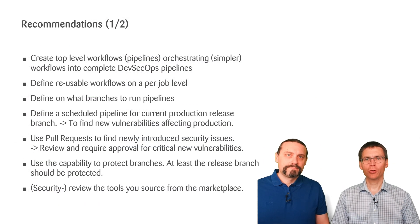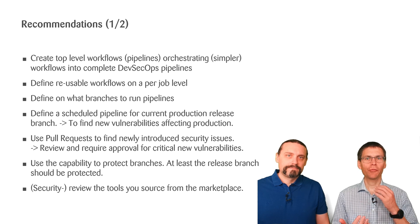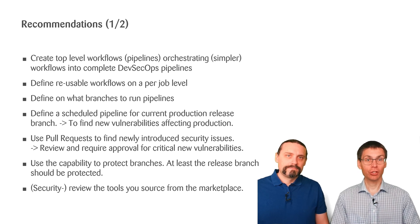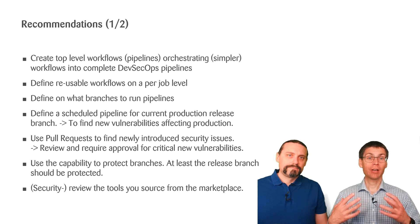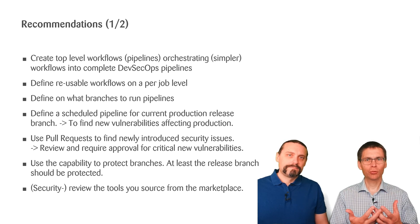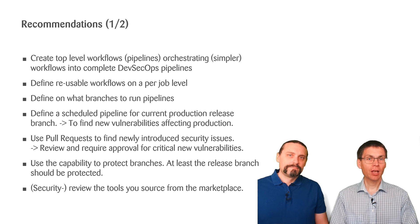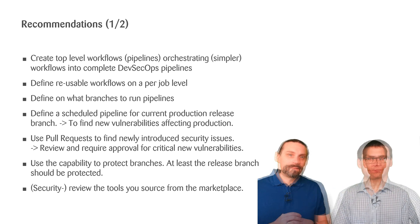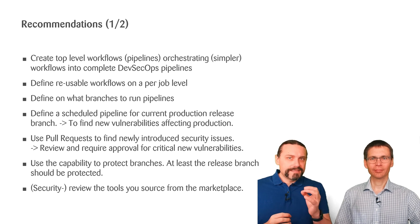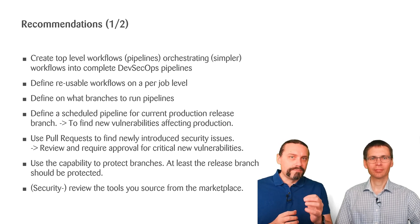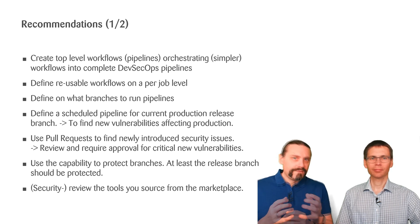Another thing that works great for us is using pull requests to find newly introduced security issues. This will also require you to define a process to review and maybe require approval if you find new critical vulnerabilities during a pull request. It is essential that you are protecting your main branch, and for that you can use branch protection rules — this is our recommendation to you.